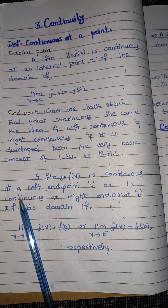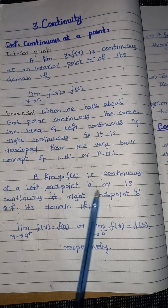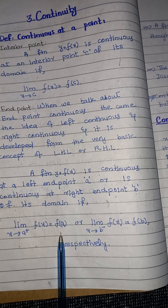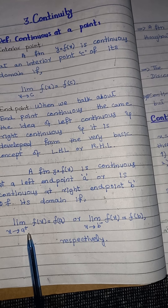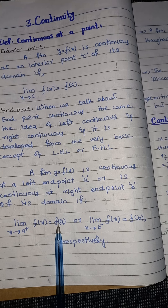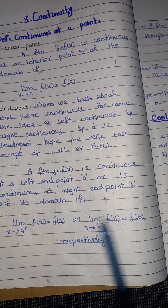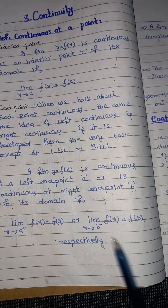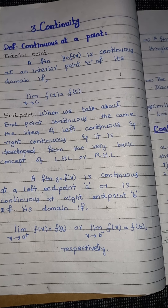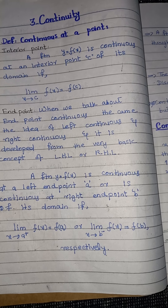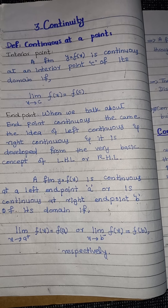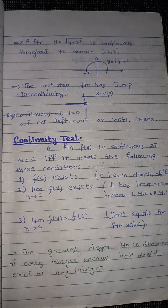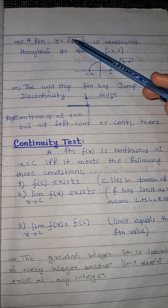A function is left-continuous at a left endpoint a, or right-continuous at a right endpoint b, of its domain if the corresponding conditions hold. If we approach from the right side and the answer equals f(a), or approach from the left side and the answer equals the left endpoint value, then we say it is right-continuous or left-continuous respectively.